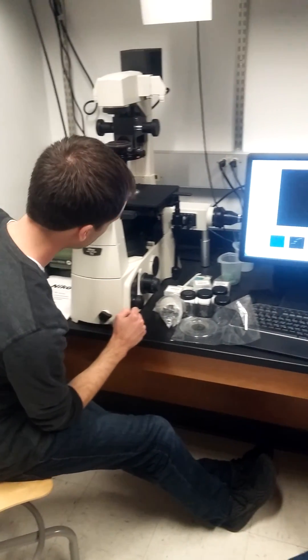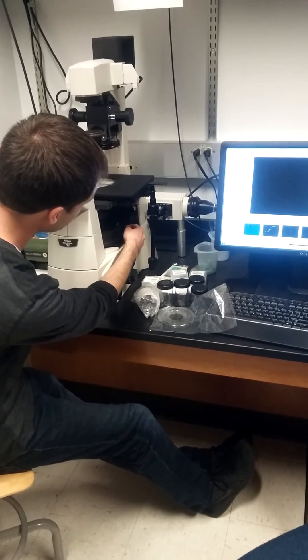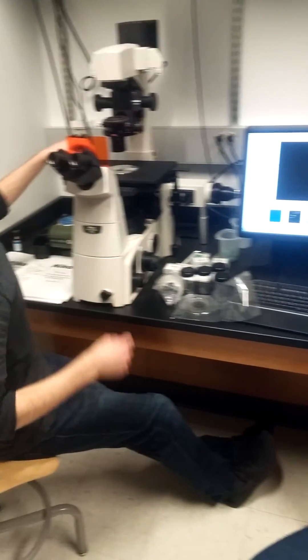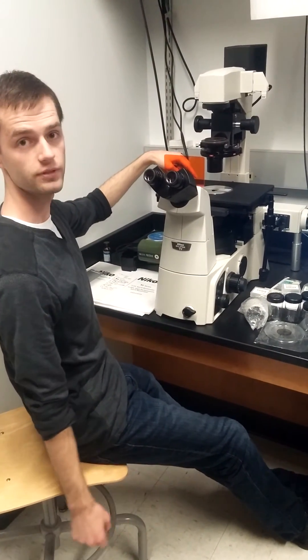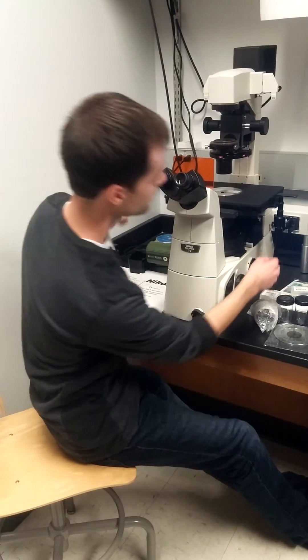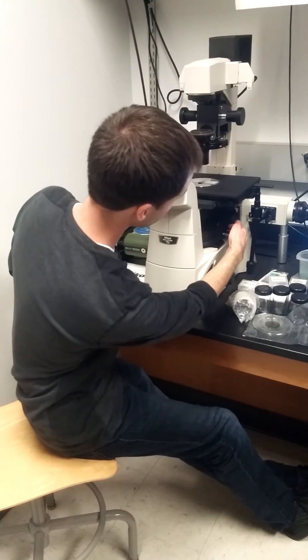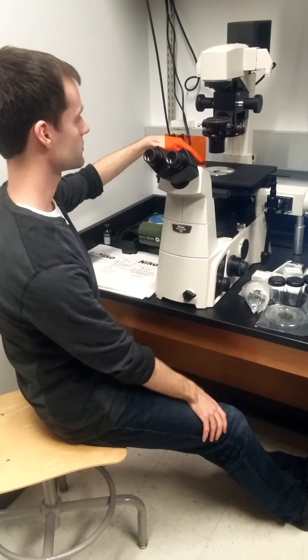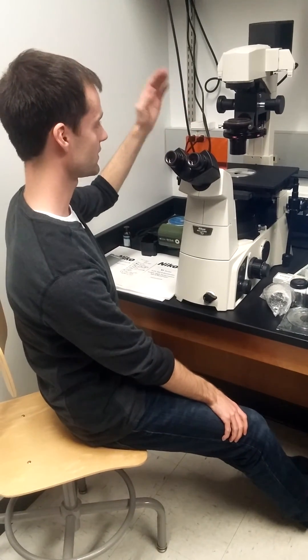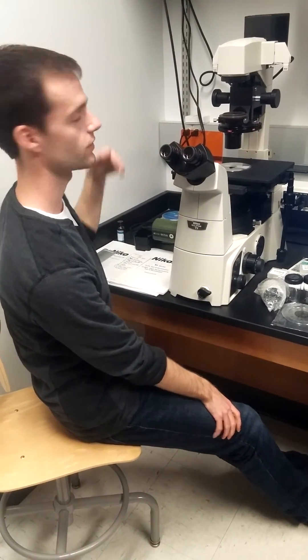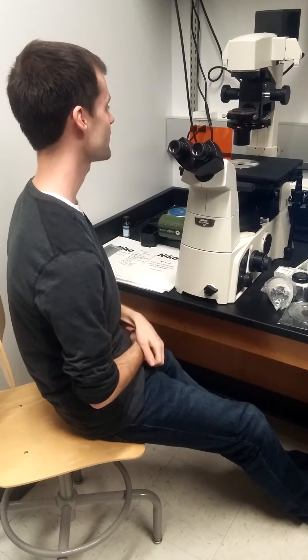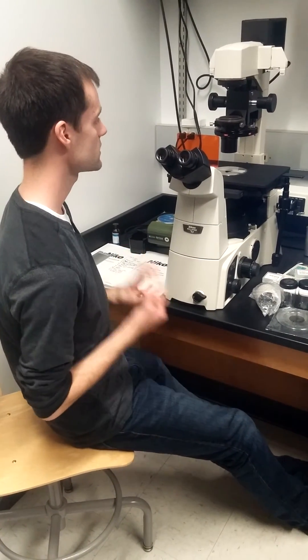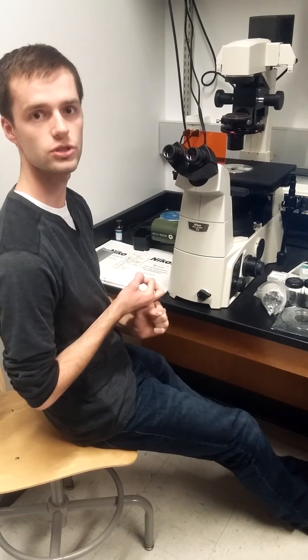Finally, just to clarify, it's important that when we have a specimen on our stage and we're not actively viewing it, that we close this shutter because otherwise our specimen will be flooded with the fluorescent light and we'll get photobleaching effects, which can damage the cells and damage the dye so we don't get good pictures.